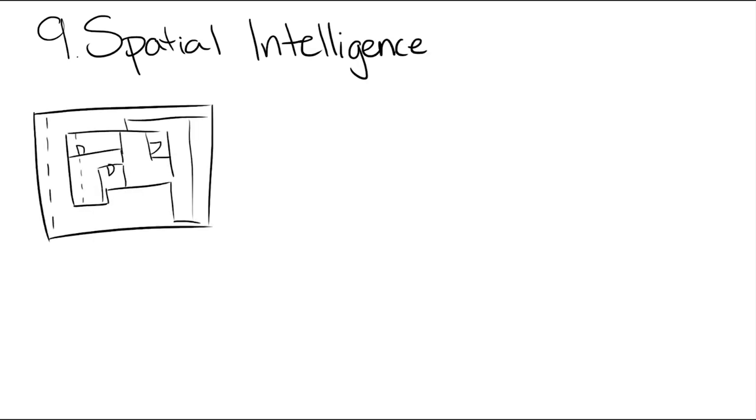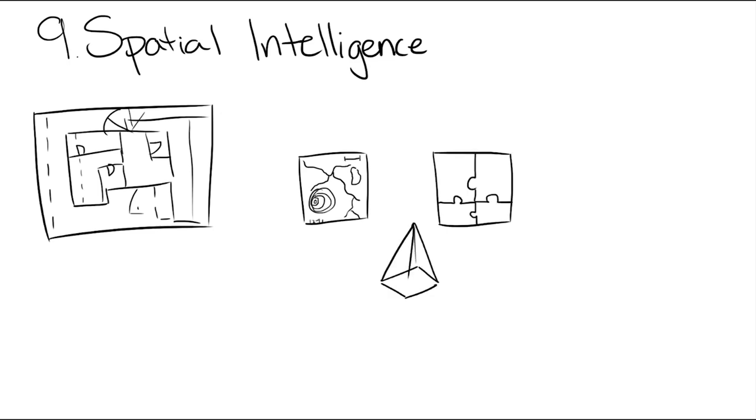Number nine, spatial intelligence. People with a high spatial intelligence are good at things that require mental manipulations of physical perspectives. These people tend to be very skilled at map reading, jigsaw puzzles, and seeing or drawing objects and situations from a different perspective, without necessarily having seen it from that perspective.